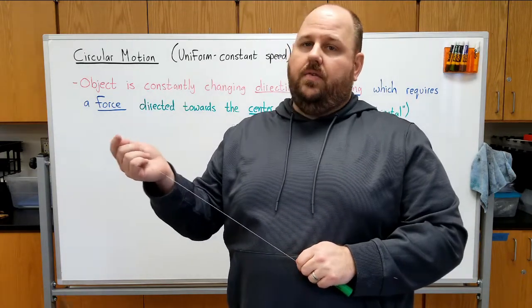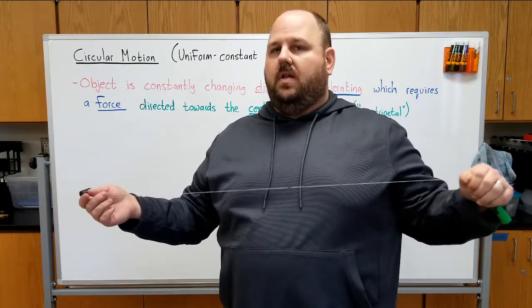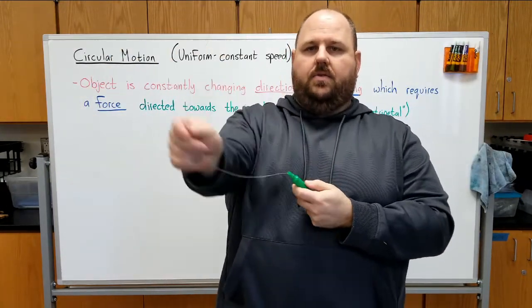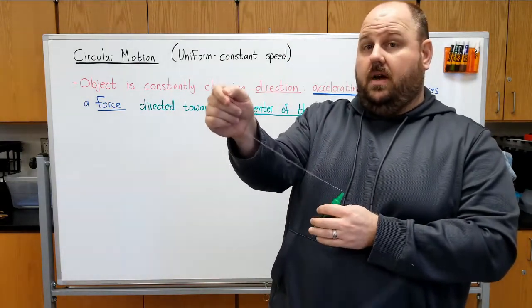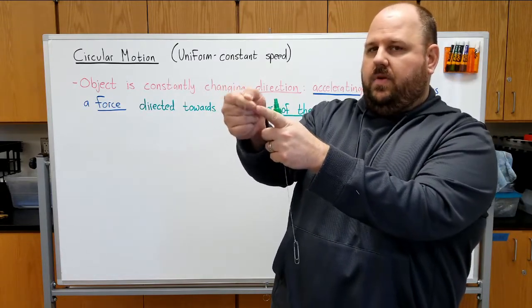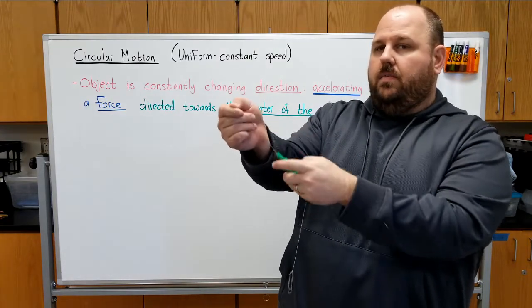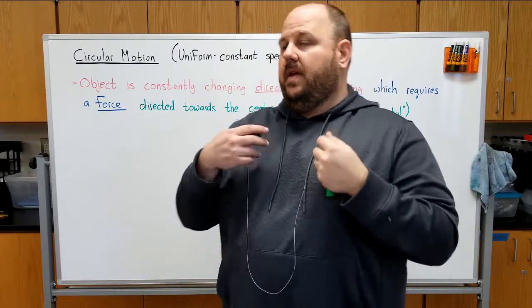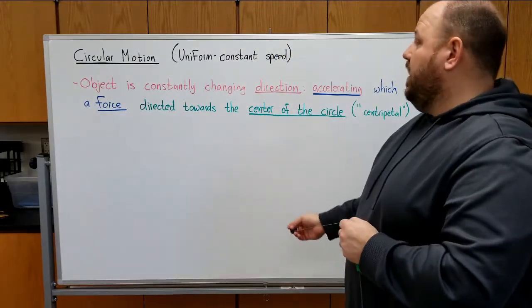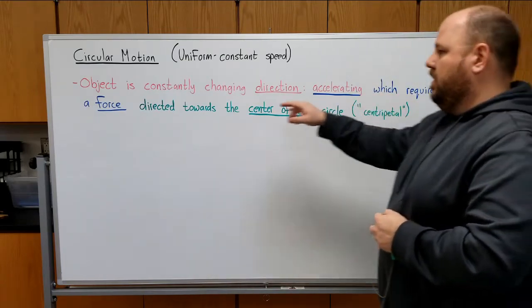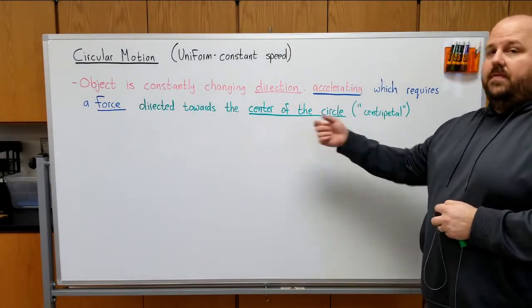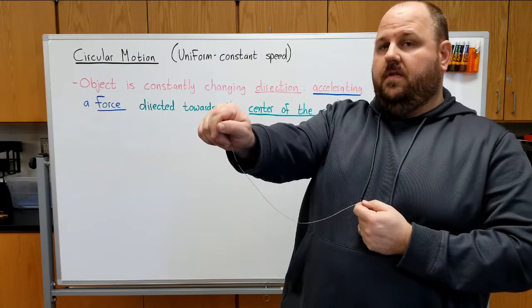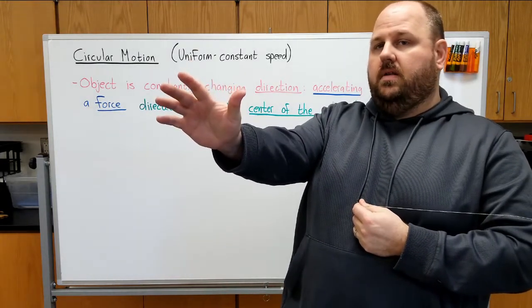And so in order for something to be accelerating, we need to remember that that means that there has to be a force. And the best way to visualize forces and understand their directions is to stick with things with strings. And so if you look carefully, as I swing this thing in a circle, the direction that the string is pulling the rubber stopper is always towards my hand, namely where I'm pinching the string between my thumb and my pointer finger. And so if I were to remove that force and let go of the string, it doesn't move in a circle anymore.